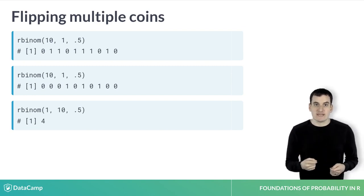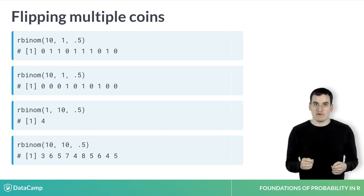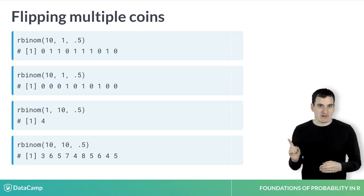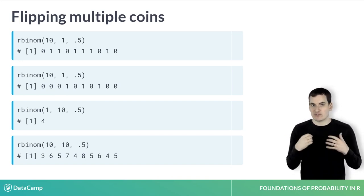We could also say that we want to do multiple draws and flip multiple coins within each by setting both of the arguments. In this case, we're saying we want to perform 10 draws and flip 10 coins within each draw. This shows us that when we flip 10 coins, the resulting number of heads might be 3, 6, 5, or so on.